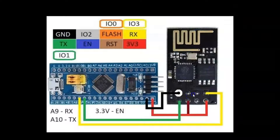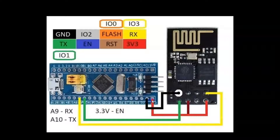These eight pins are labeled here. A9 goes to RX, A10 goes to TX, and the EN pin goes to 3.3 volt. VCC goes to 3.3 volt and ground to ground.